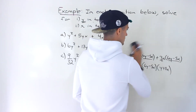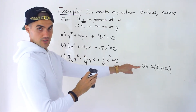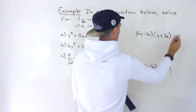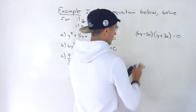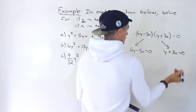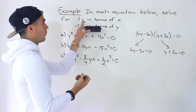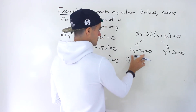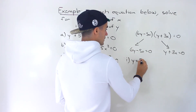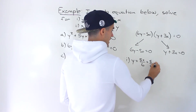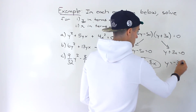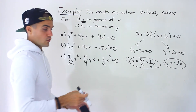So we write the left side factored as those two brackets and find when they equal 0: when does 6y minus 5x equal 0, or when does y plus 3x equal 0? For y in terms of x: from the first factor, we isolate y by bringing negative 5x over and dividing both sides by 6, giving y equals 5x over 6. From the second factor, we bring 3x over to get y equals negative 3x. Those are the two solutions for y in terms of x.